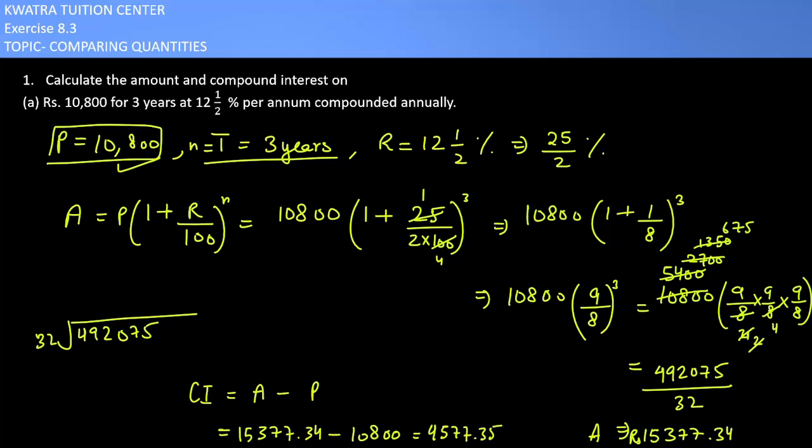So yes, this is what you are getting as the compound interest value. The compound interest you are getting as 4577.35. So yes, this is the answer to question number 1, part A. Now we'll be moving to part B.